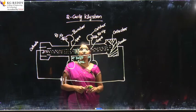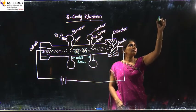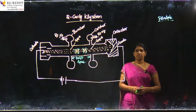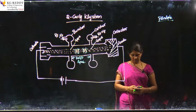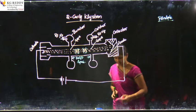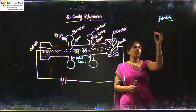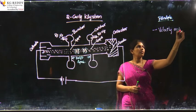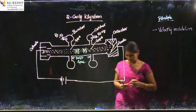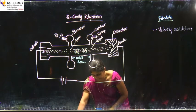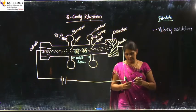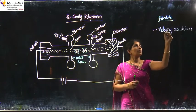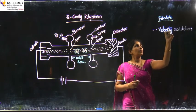A key question to consider: what is the principle of the reflex klystron? The answer is velocity modulation. Velocity modulation is the principle of the reflex klystron.